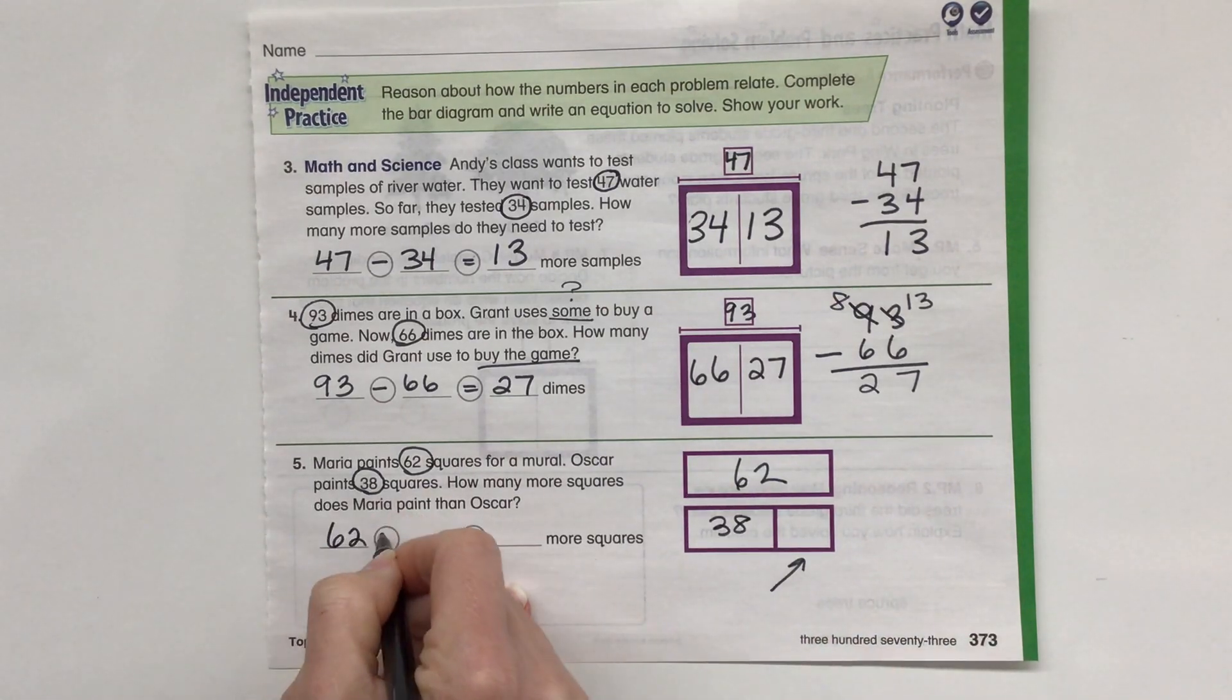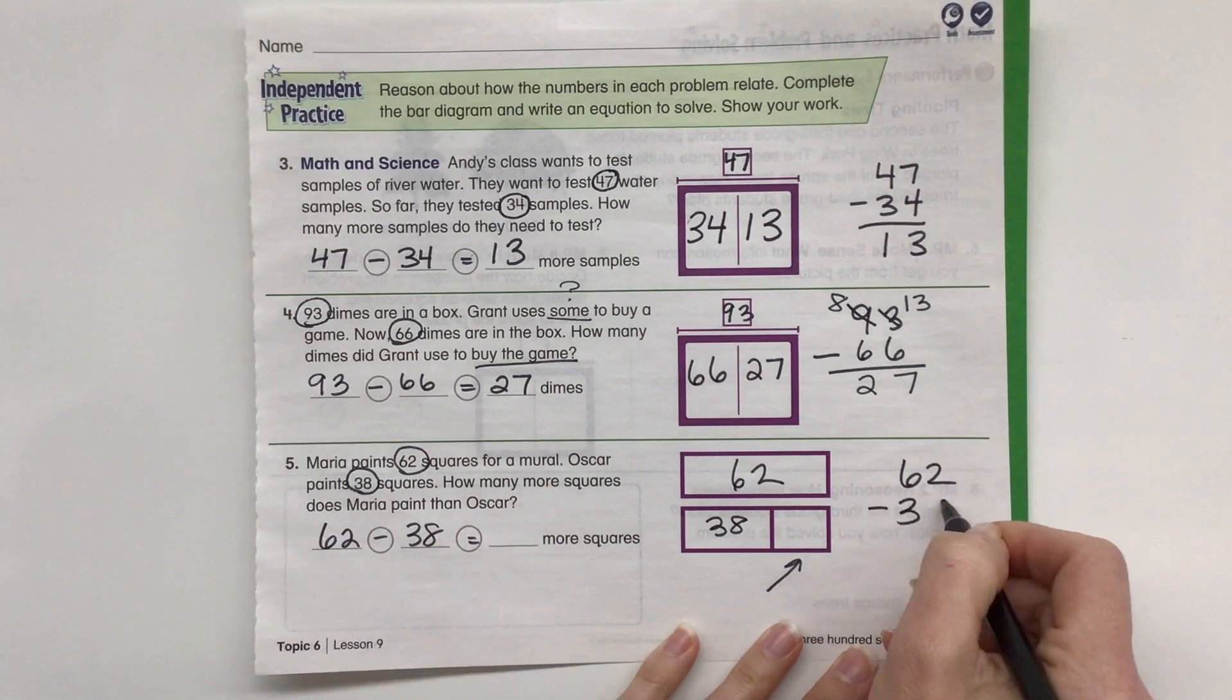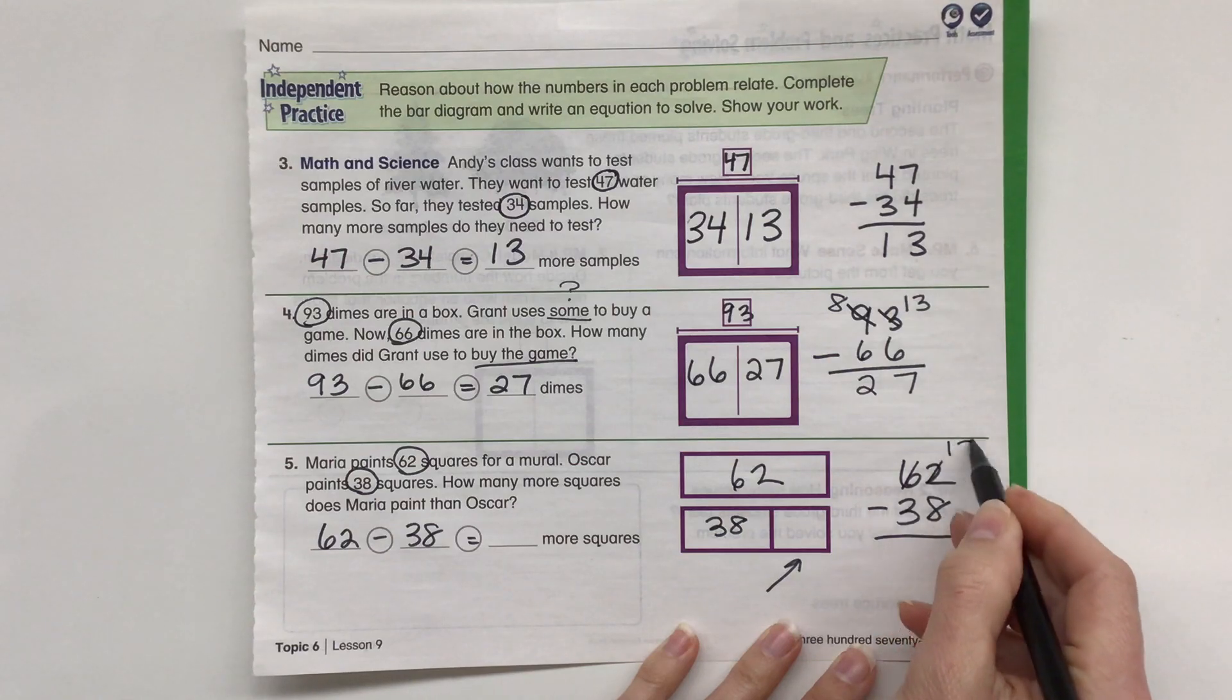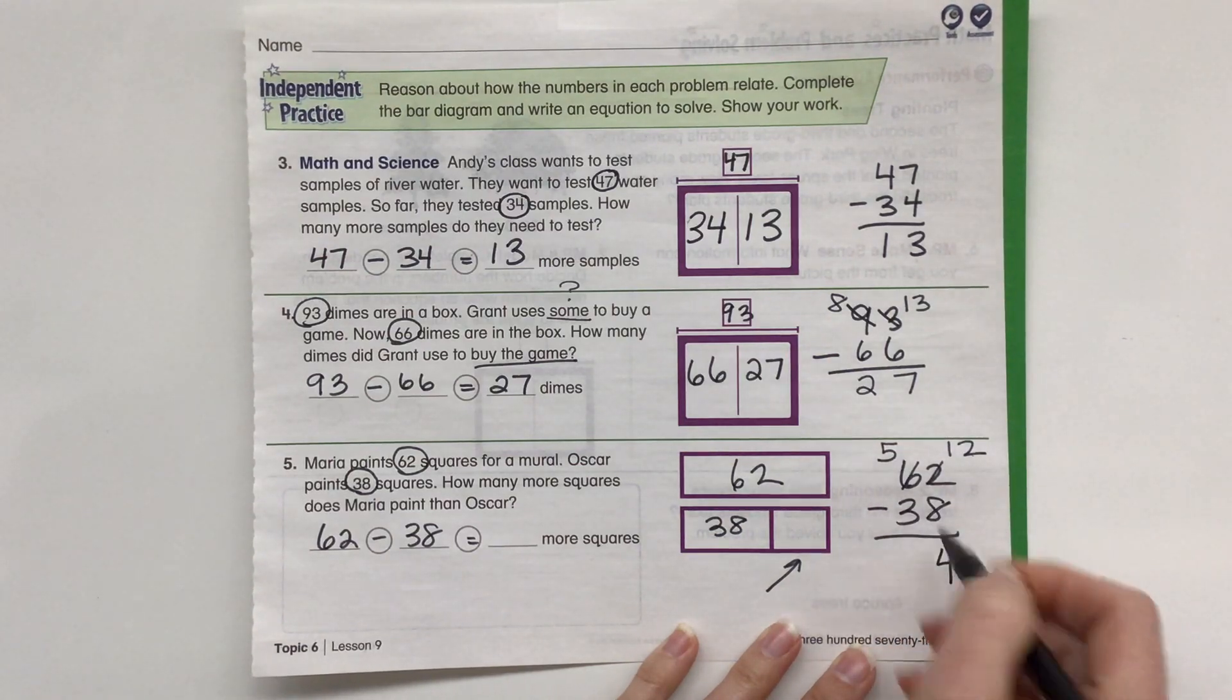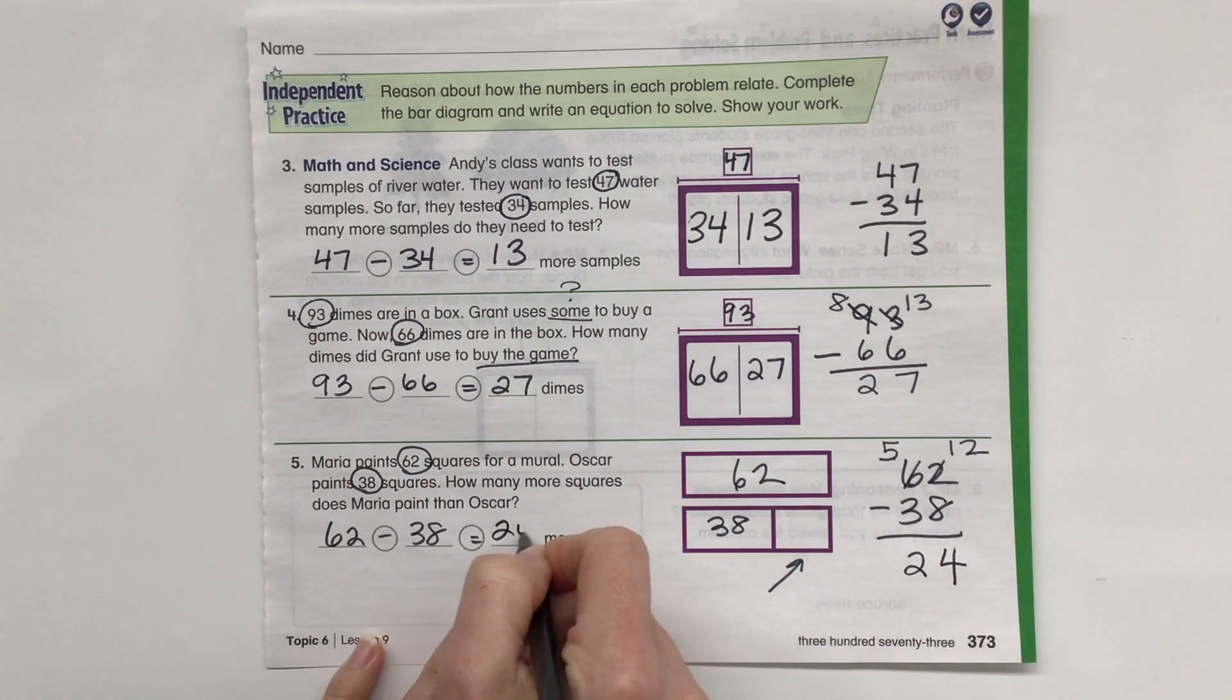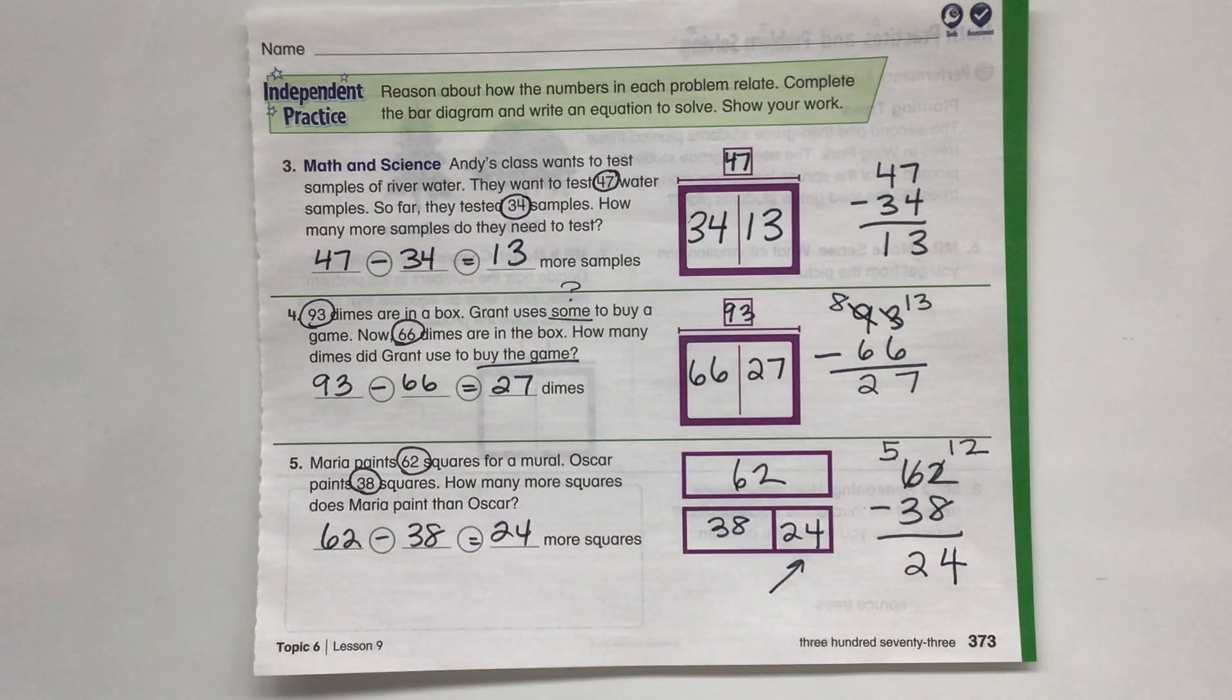So we know we're going to do 62 minus 38 equals. So 62 minus 38. 2 minus 8, that's not going to work. We have to regroup 12 and 5. 12 minus 8 is 4. 5 minus 3 is 2. So 24 squares is our difference.